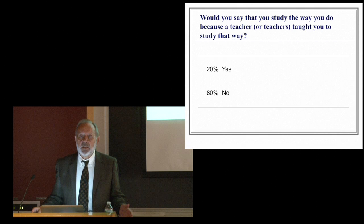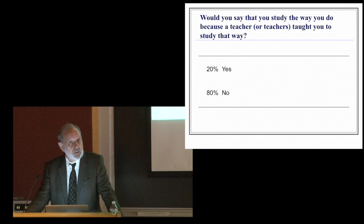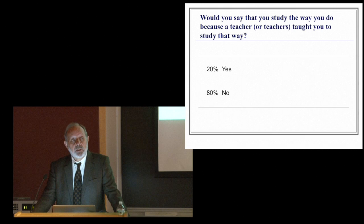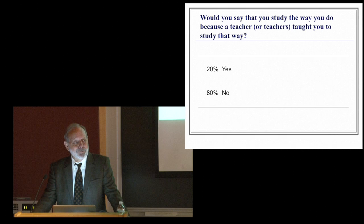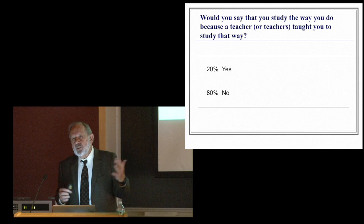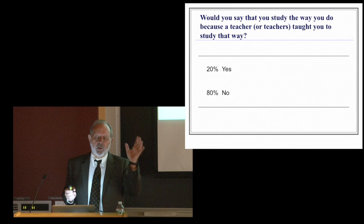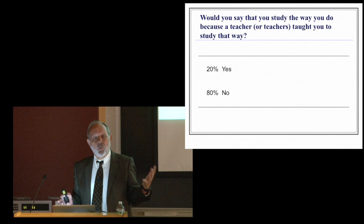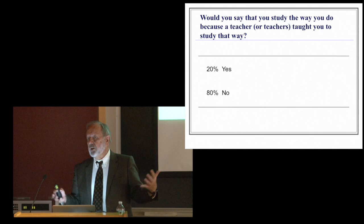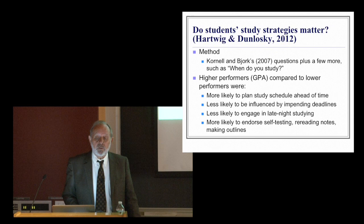And then finally, would you say you study the way you do because a teacher or teachers taught you to study that way? So notice only 80% said no. And for the 20%, we don't know what they were taught, whether it was good or bad. But basically, I think there's an underlying implicit assumption that somehow people learn on their own how to learn. We worry about whether they have math proficiency, English, something else. We don't worry about whether they're equipped to take on four or five, six more years of managing this thing we call a college education, for example.